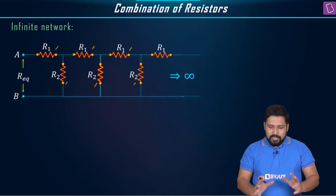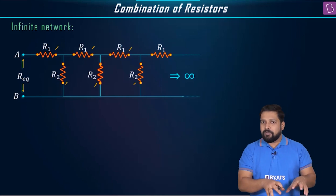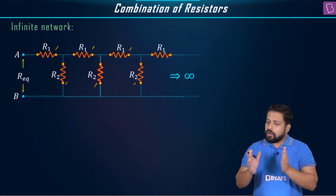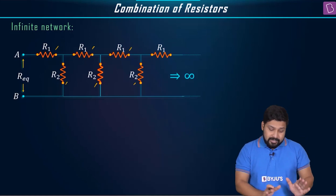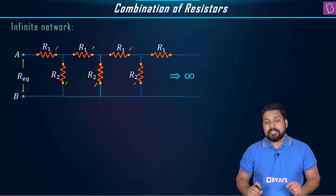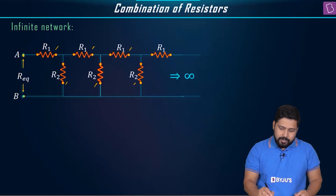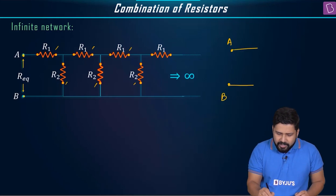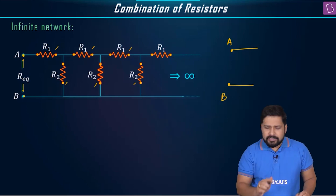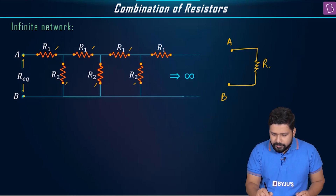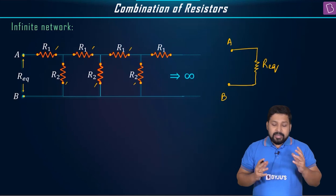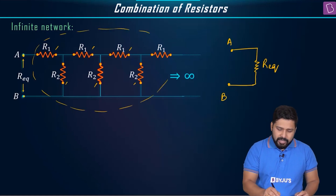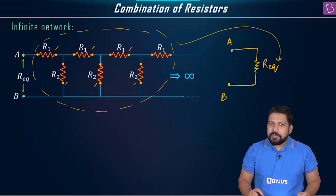Now, the method to solve it. The first thing is to identify that this is an infinite network problem — there will be a combination of resistances with a pattern that keeps repeating. Once identified, what we do is assume that we can replace the entire network with one single resistance, and we call that resistance R equivalent between A and B.